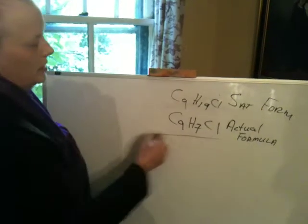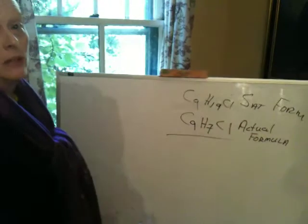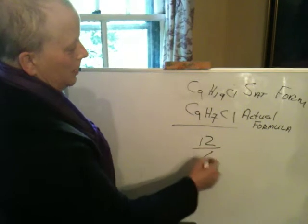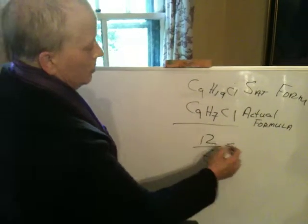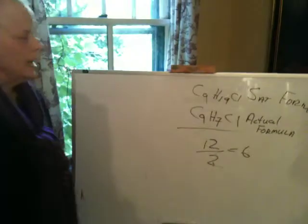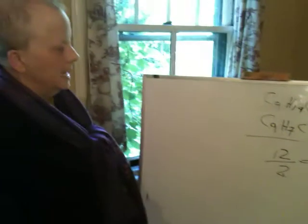The difference between these two, that's what we're interested in, is how many hydrogens is our structure missing. The difference between these two is 12, divided by 2 equals 6. So you would have to draw a structure with an unsaturation of 6.